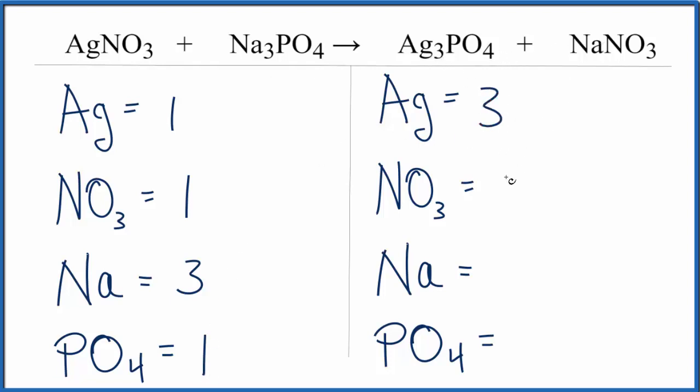Over on the product side, I have three Ags. I have NO3s. I just have one of those. Sodiums, I have one of those. And then again, this phosphate ion, PO4, one of those.